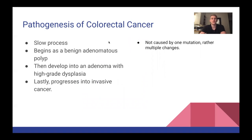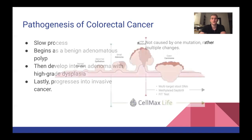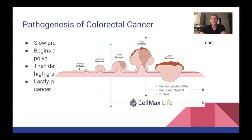Pathology of colorectal cancer: it is a slow process, taking several years to develop, making it easier to identify at an early stage. It begins as an adenomatous polyp, then develops into an adenoma with high-grade dysplasia, which mimics a cancerous tumor, and lastly progresses into an invasive cancer. Colorectal cancer is not caused by one mutation — it is caused by multiple genetic changes.